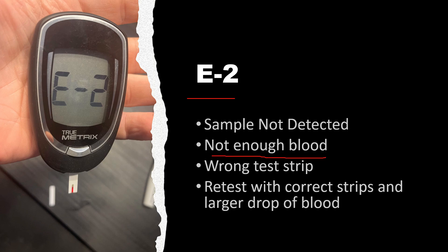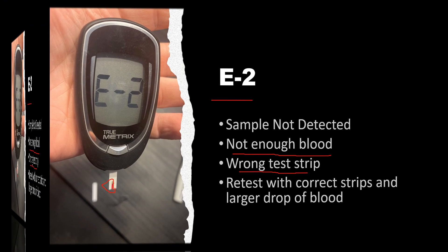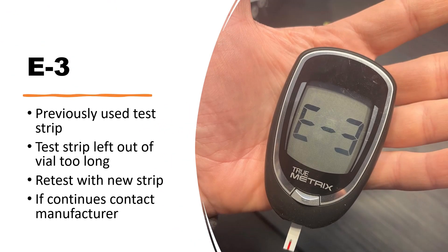E2 means a sample was not detected — simply that there was not enough blood. Typically the blood will go all the way up the test strip, so ensure that you have an appropriate size drop of blood. It could also mean that you are using the incorrect test strip for this meter.